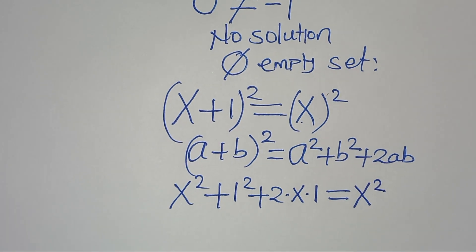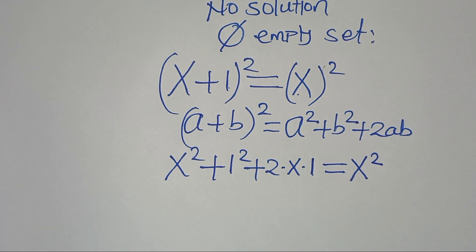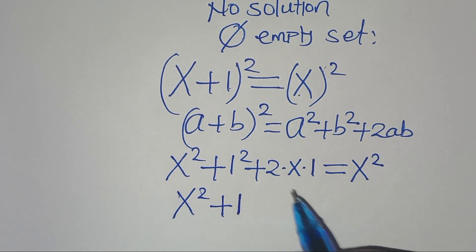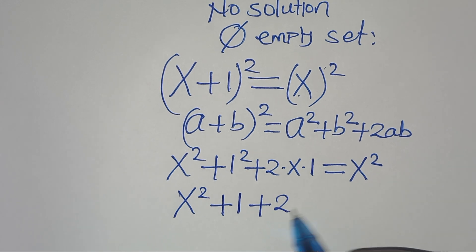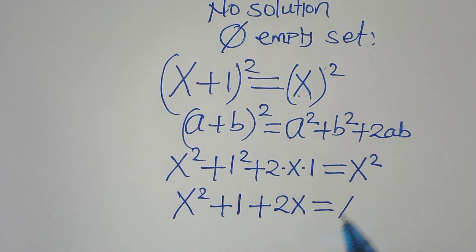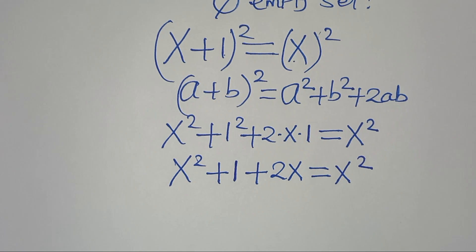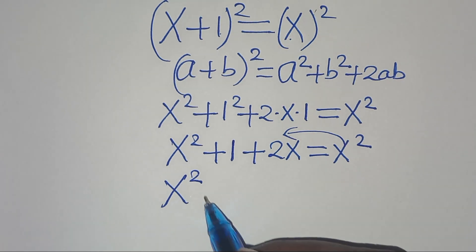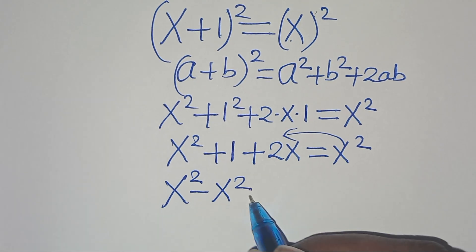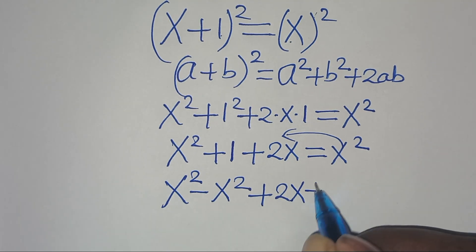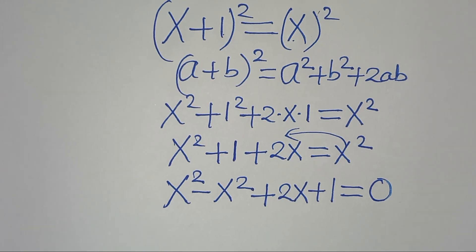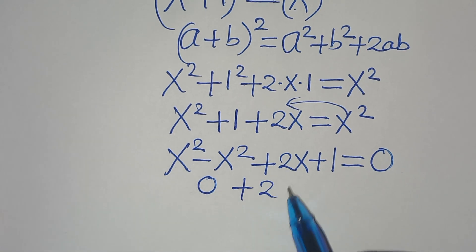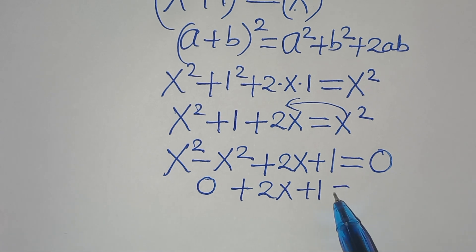We have x squared. The next step: this is x squared plus 1 squared, which is 1, then 2 times x times 1, which is plus 2x. This is equal to x squared. Let's take x squared on the left-hand side, so that we have x squared minus x squared, then plus 2x, then plus 1, this is equal to 0.